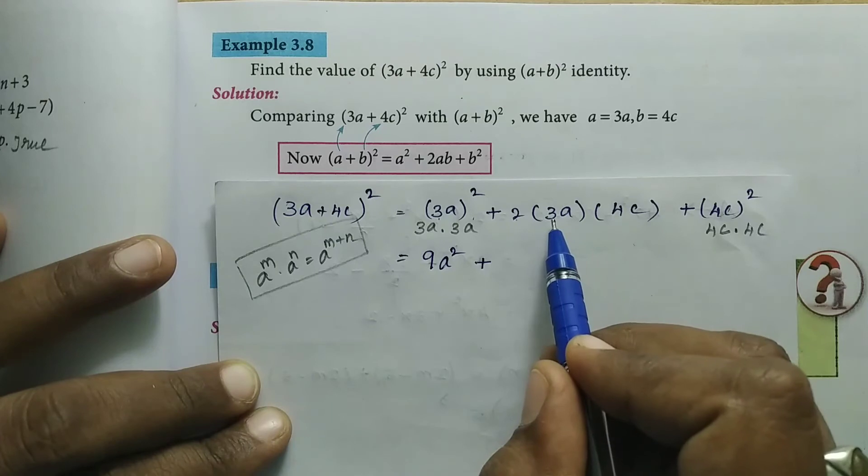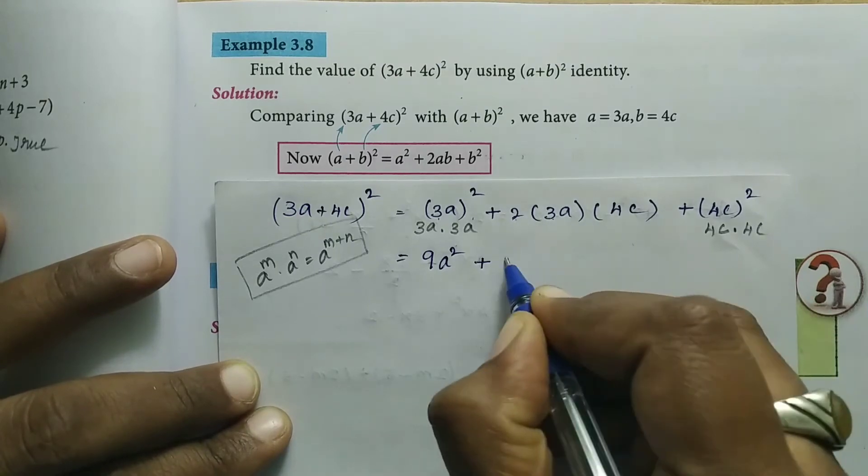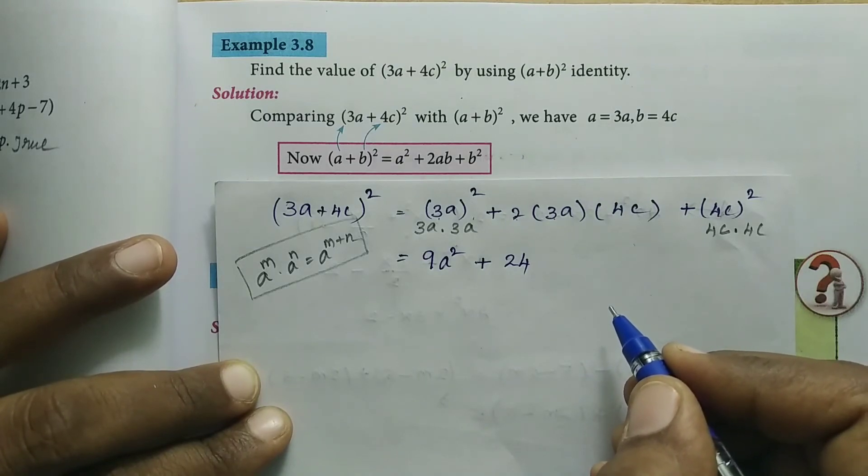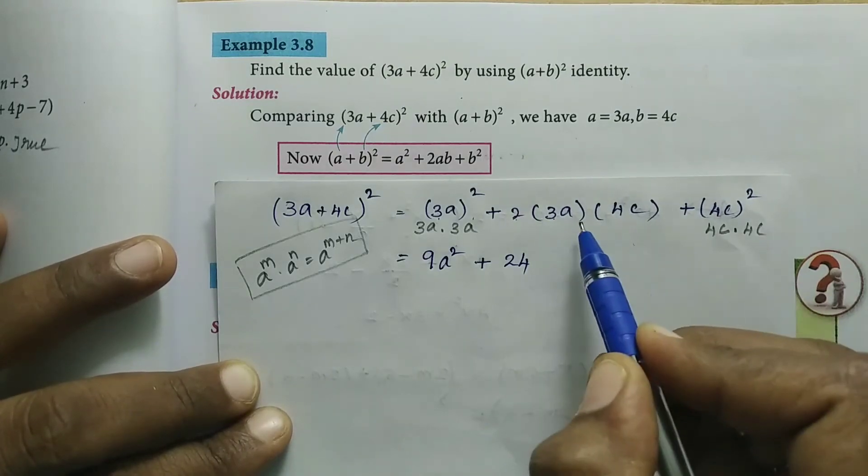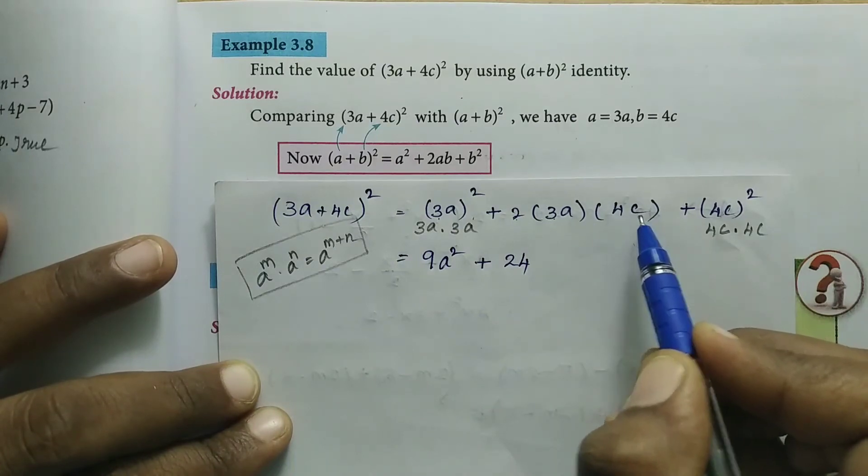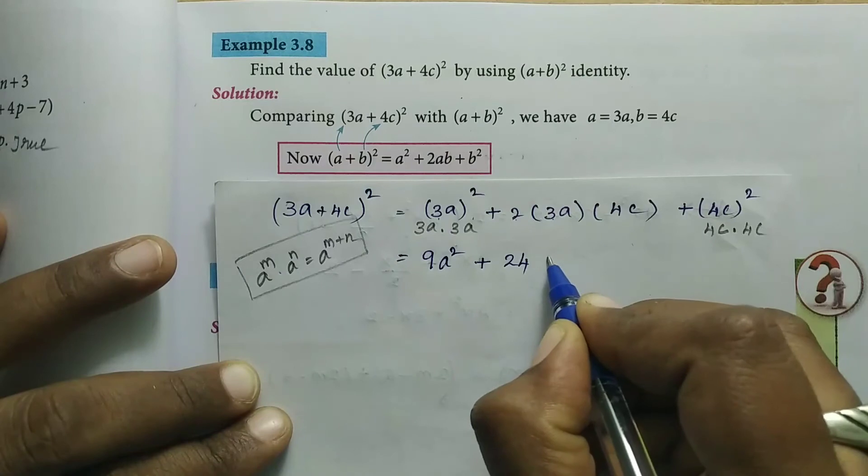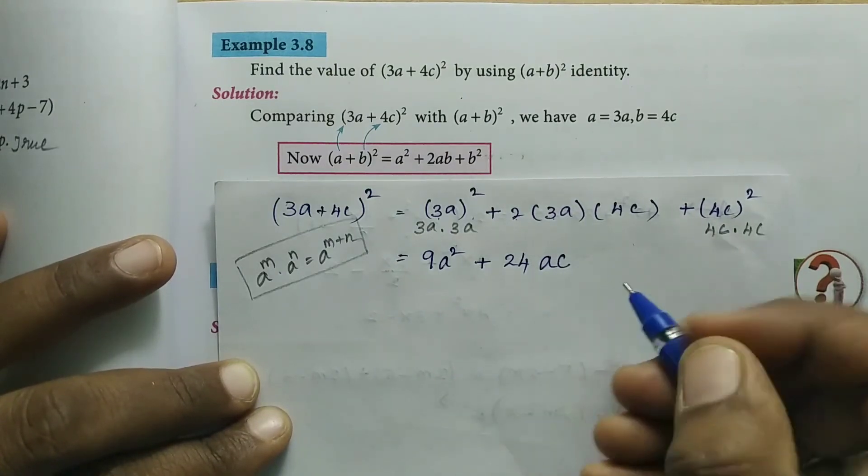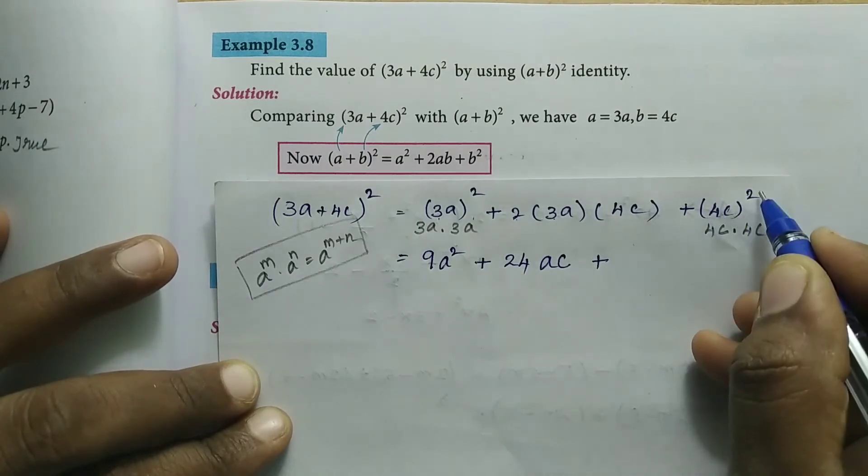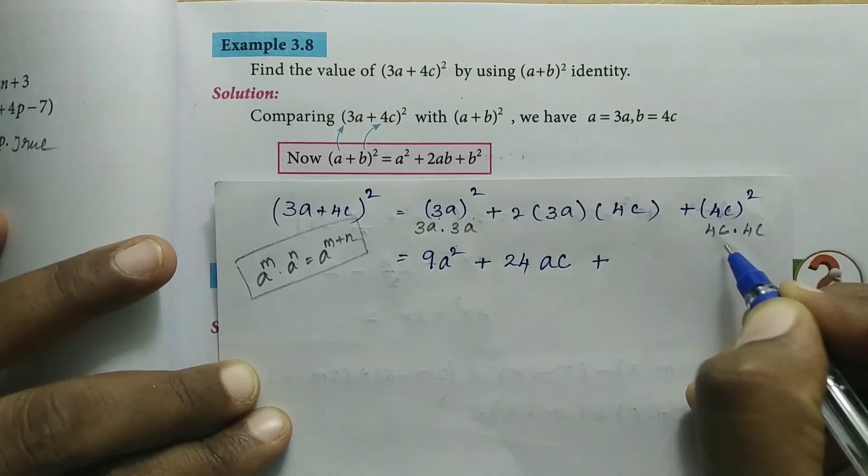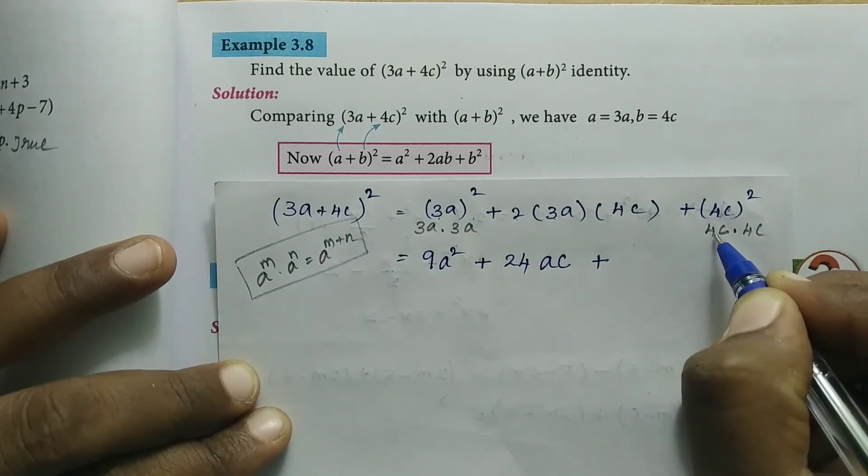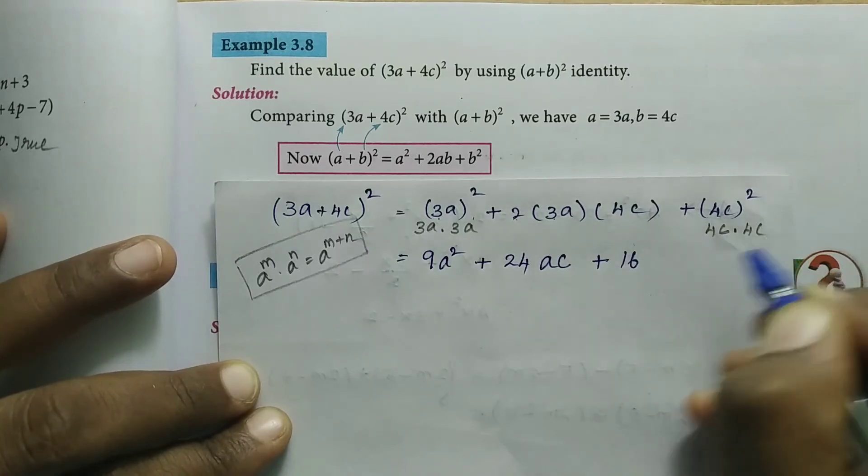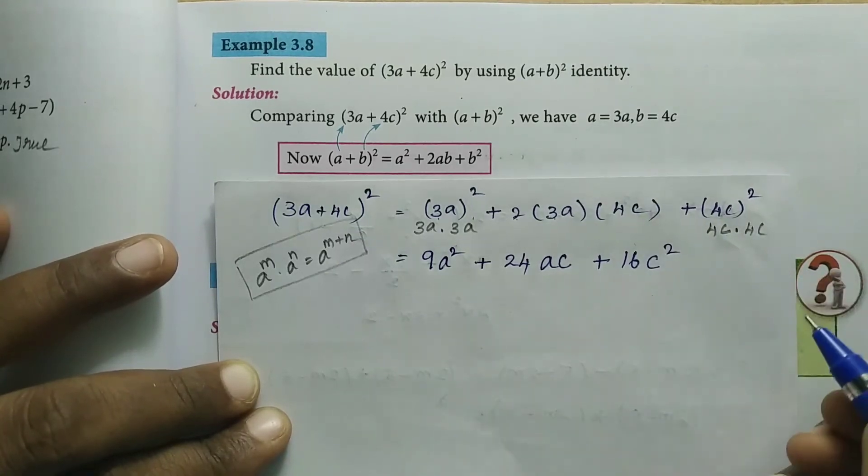3 × 4 = 12, then 12 × 2 = 24. For the variables, a × c = ac. So the middle term is 24ac. For the last term, (4c)² means 4c × 4c. 4 × 4 = 16, and c × c = c². So we get 16c².